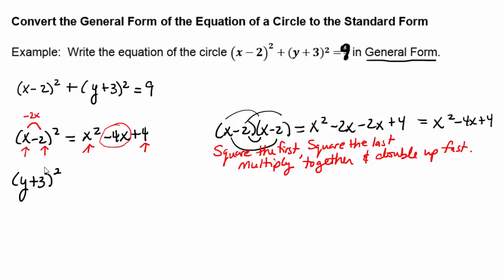Let's see if we can use that rhyme to properly expand (y + 3)². Square the first: y². Square the last: 9. Multiply together: 3y. And double up fast gives us 6y. The reason that I think it's important that you try and learn that pattern is because we're going to have to be going back and forth with that pattern, and the more comfortable you are it'll just be easier for you.